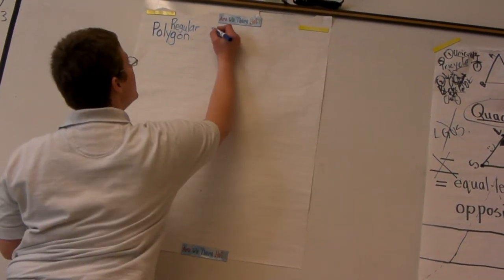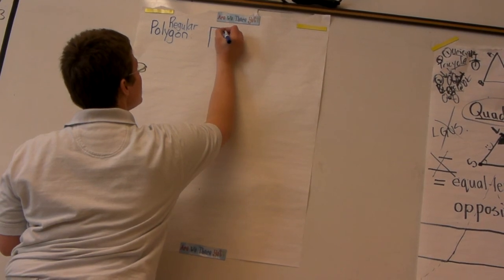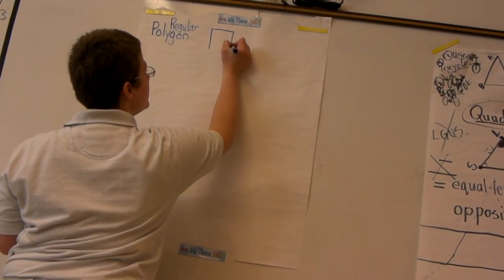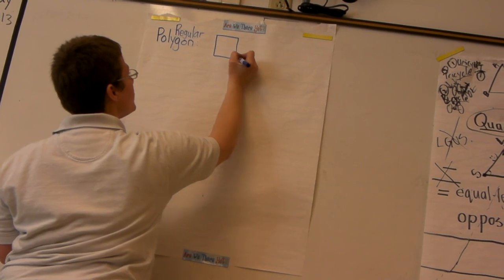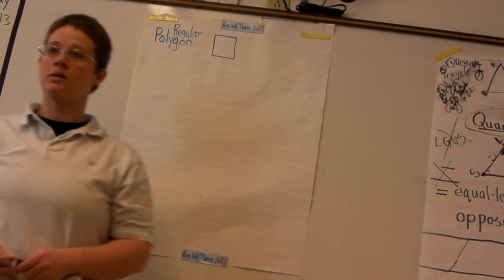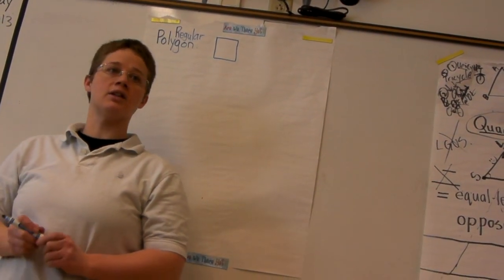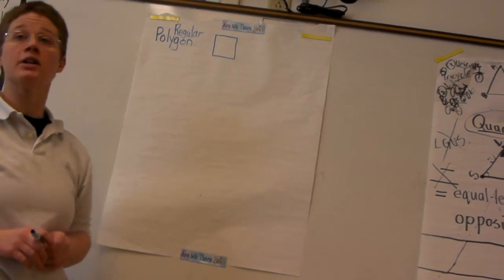It's where all the sides and all the angles are equal. So how about a square? Do you think a square is a regular polygon? If all those sides and all those angles are the same, give me a thumbs up. Yes, this is a regular polygon.